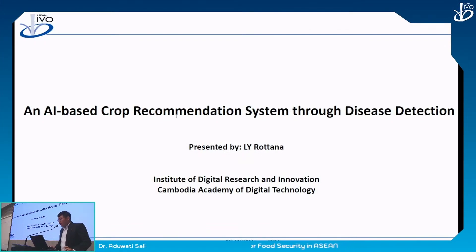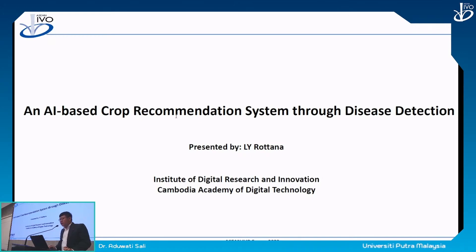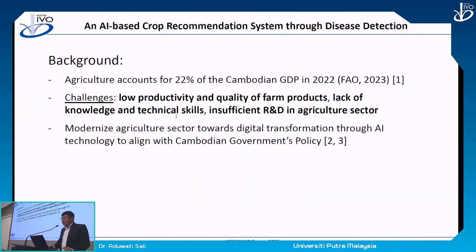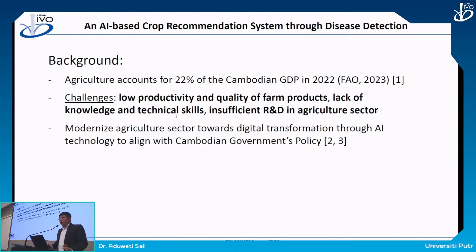Good morning, everyone. I am Rotana Lee from the Institute of Digital Research and Innovation, Cambodia Academy of Digital Technology. Today I will present my topic on an AI-based crop recommendation system through disease detection. Based on the Food and Agriculture Organization statistics in 2023, agriculture accounts for more than 22% of the Cambodian GDP in 2022. However, there are still challenges in the agricultural sector, including low productivity and quality of farm products, lack of knowledge and technical skills for farmers, and insufficient research and development. Our goal is to modernize the agricultural sector towards digital transformation using AI technology, aligned with the government policy for digitalization in the agricultural sector.